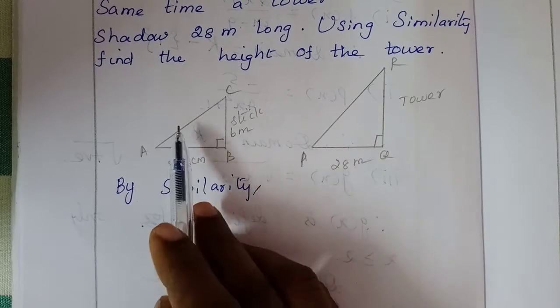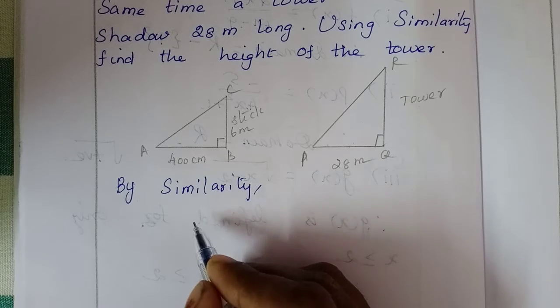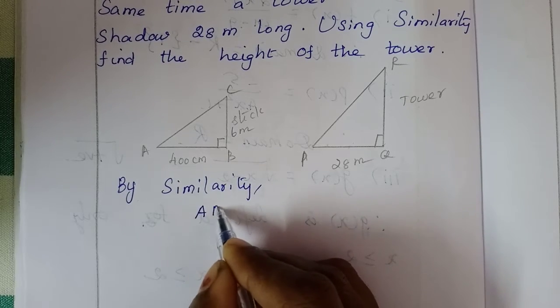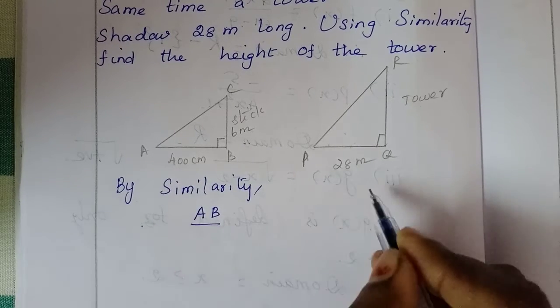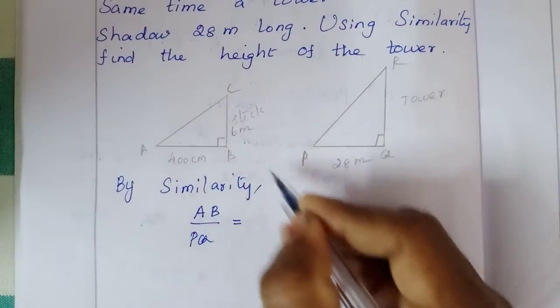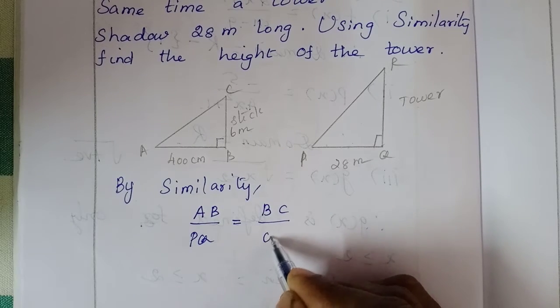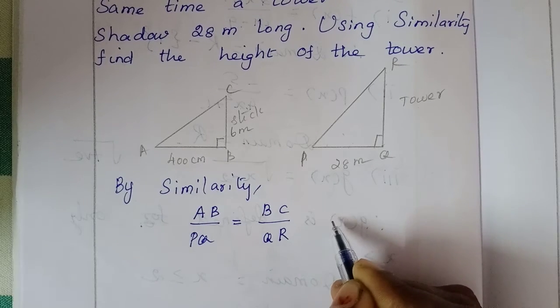Now the ratio. The unknown side, first base is AB, first triangle base is AB. Second triangle base is PQ. This vertical is BC, this vertical is QR. Third side is unknown.